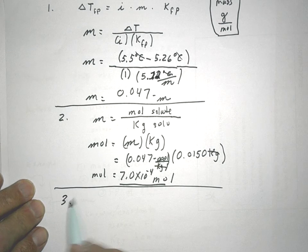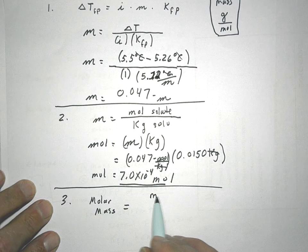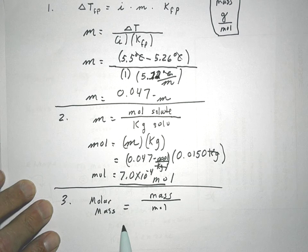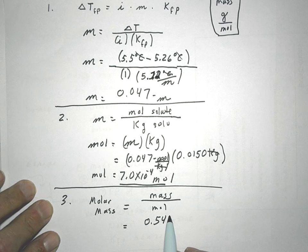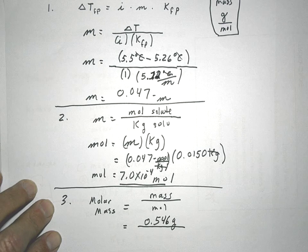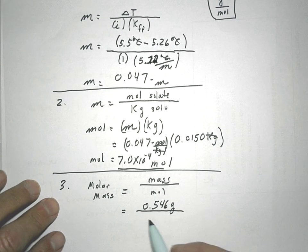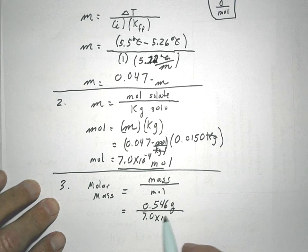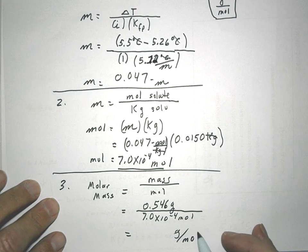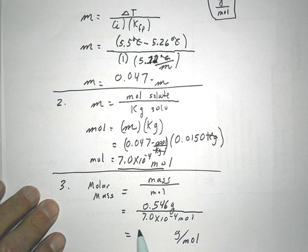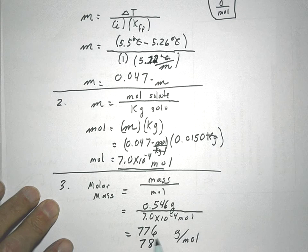Now, we simply determine the molar mass, because again, molar mass is the grams per mole. So, in this case, grams, we look at the problem that was given. We measured out 0.5, in the problem it said 0.546 grams of the unknown hormone, in this case, was measured out and dissolved in the 15 grams of benzene. We've just calculated moles. Look at our units. They come out grams per mole, which is exactly what I need. That is molar mass. And when we divide this out, we get 776 grams per mole. And with two sig figs, I would call that 780 grams per mole.